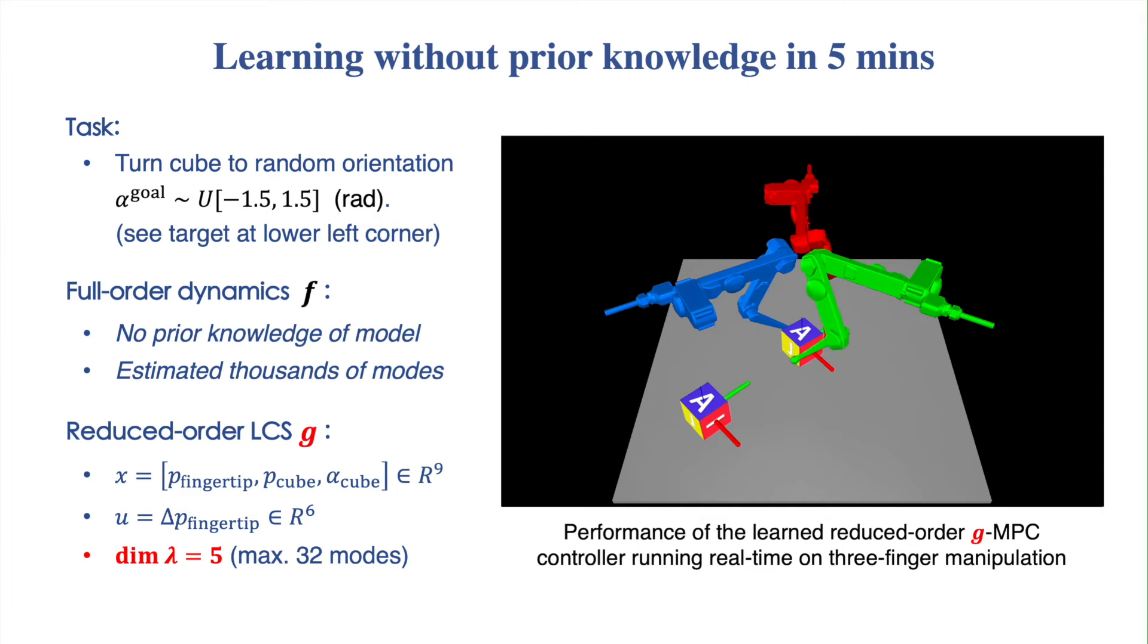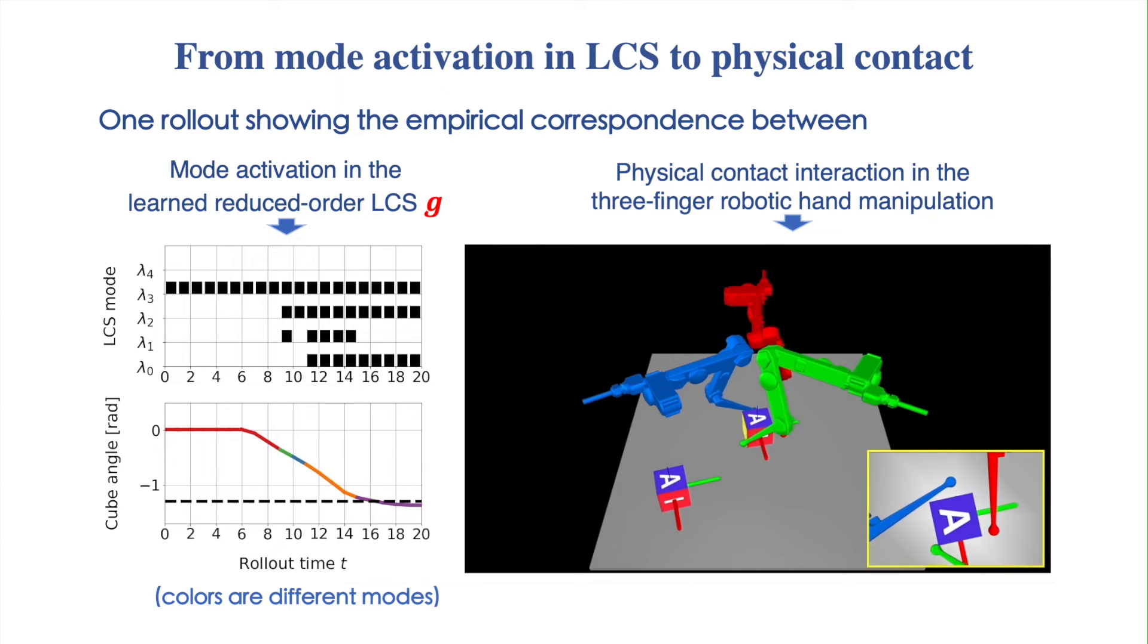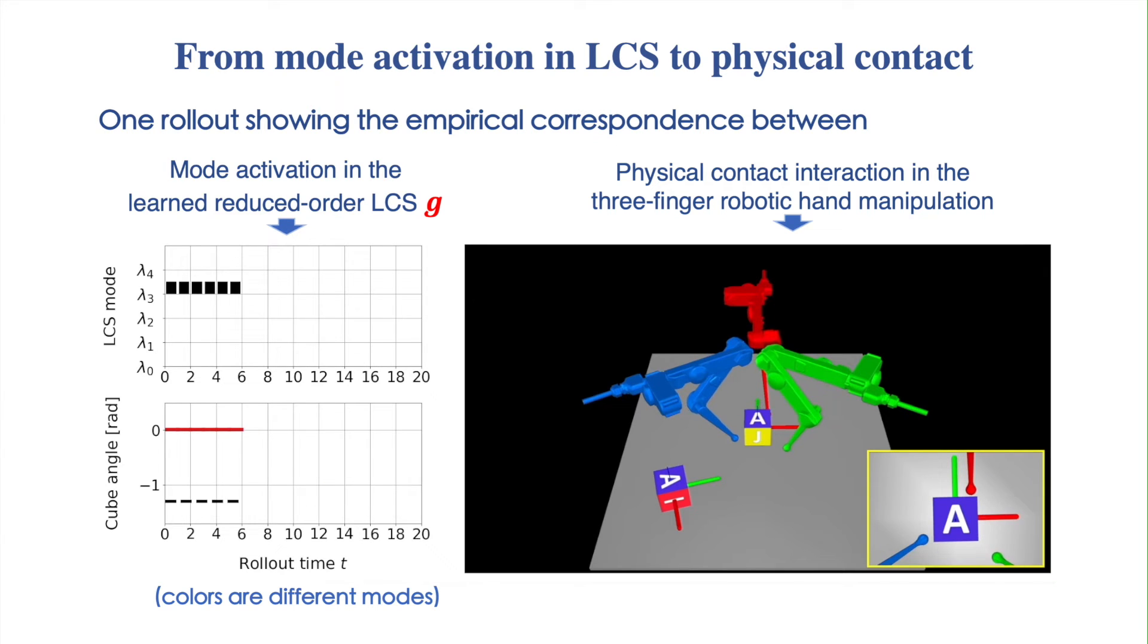Note that the number of potential modes in the manipulation system is estimated to be in the thousands. Our learned reduced-order LCS contains only a maximum of 32 modes. Here we show one rollout of running the learned reduced-order MPC controller on the system. The results show a clear correspondence between the mode activations in the learned reduced-order LCS and the physical contact interaction.